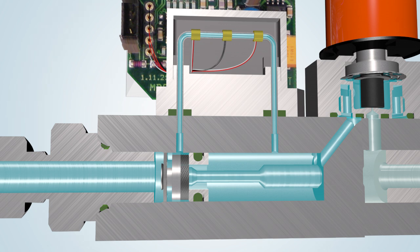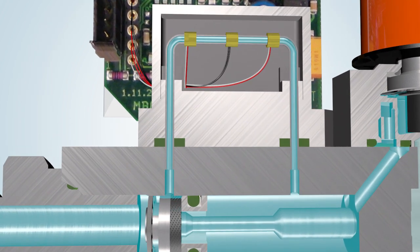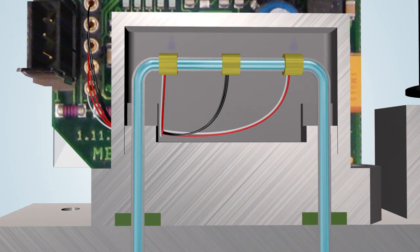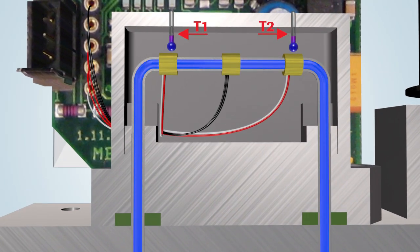The sensor consists of a thin capillary tube fitted with a heater and two temperature recorders. The heater heats the tube. As long as there is no flow, the two temperature sensors heat up evenly. The measured value is zero.